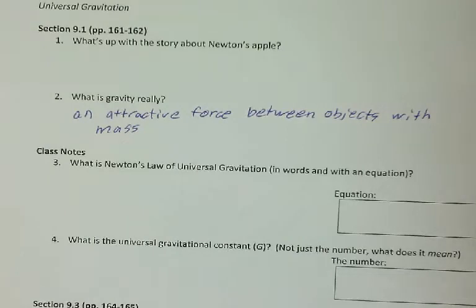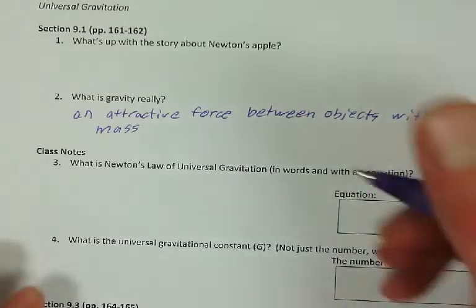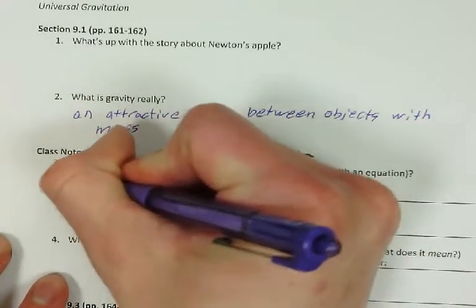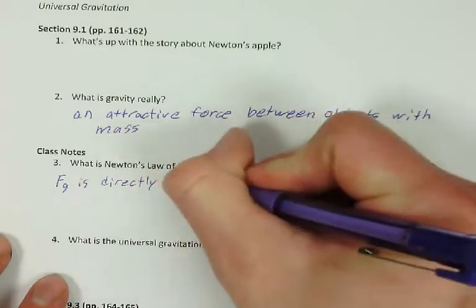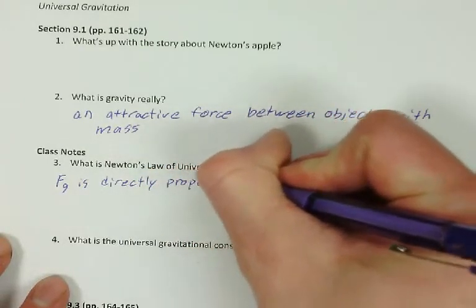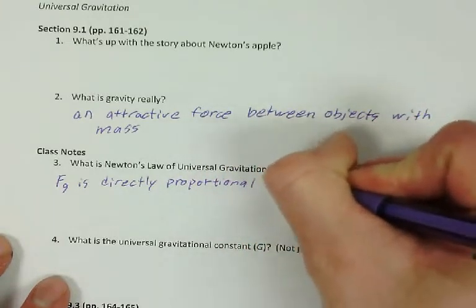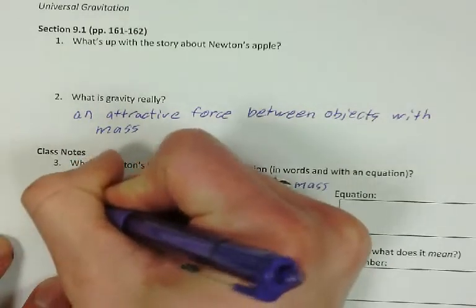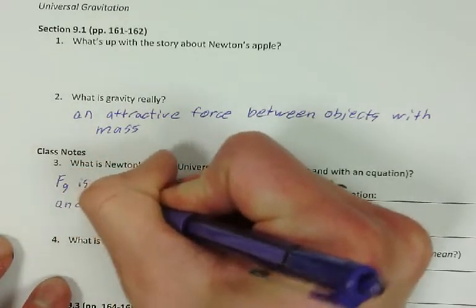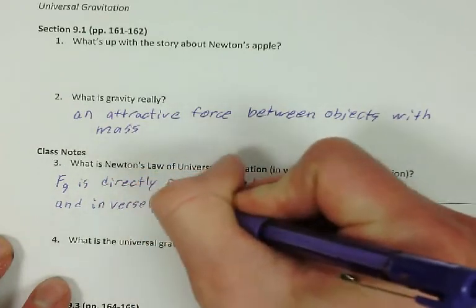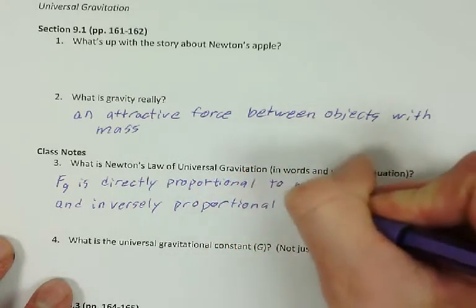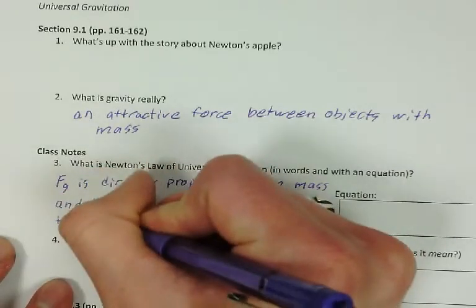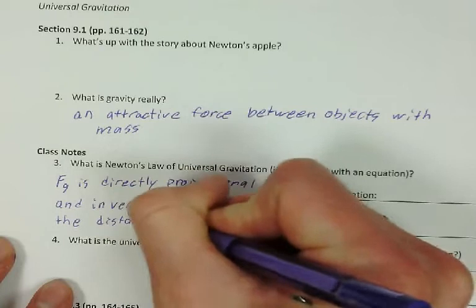So number three. What is Newton's law of universal gravitation? In other words, in words and with an equation. So the universal gravitation in words is force of gravity is directly proportional to mass and inversely proportional to the distance squared.